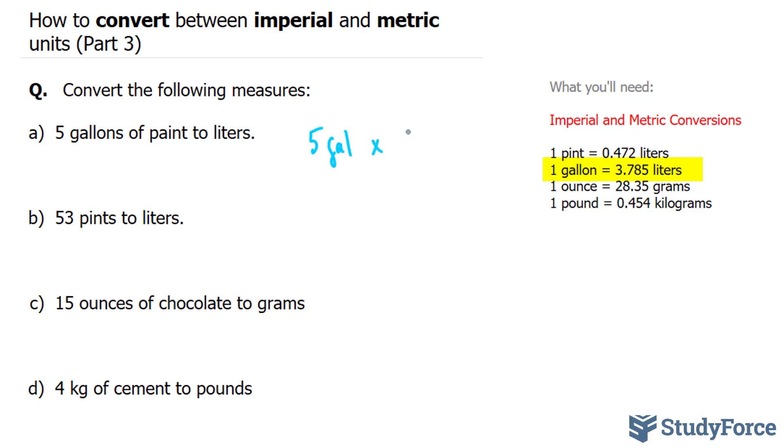you have to multiply this by 3.785 liters over one gallon. Now, I've described why I've done this in parts one and two, but in case you need a refresher, every conversion ratio shown here can be written as a fraction.